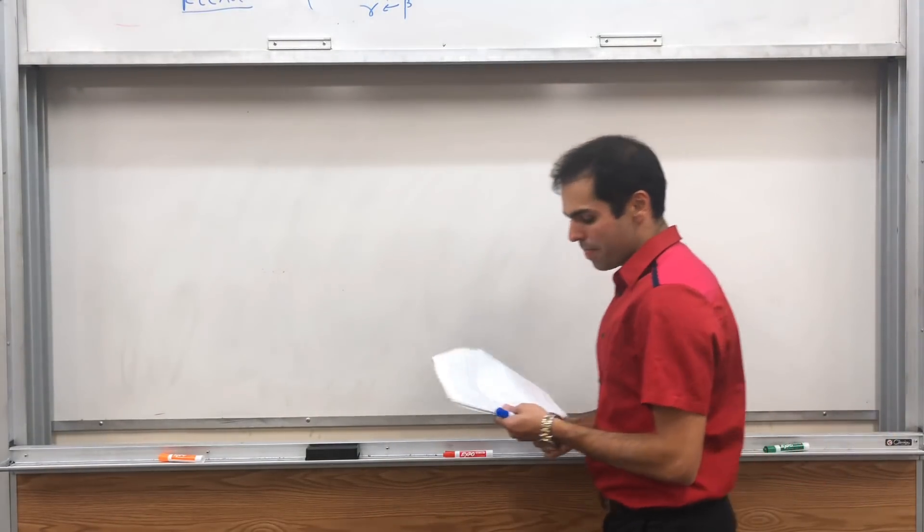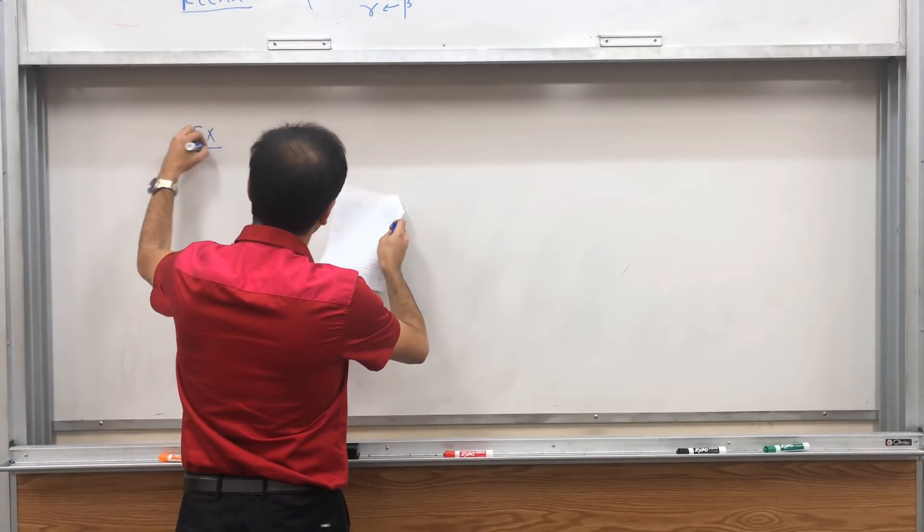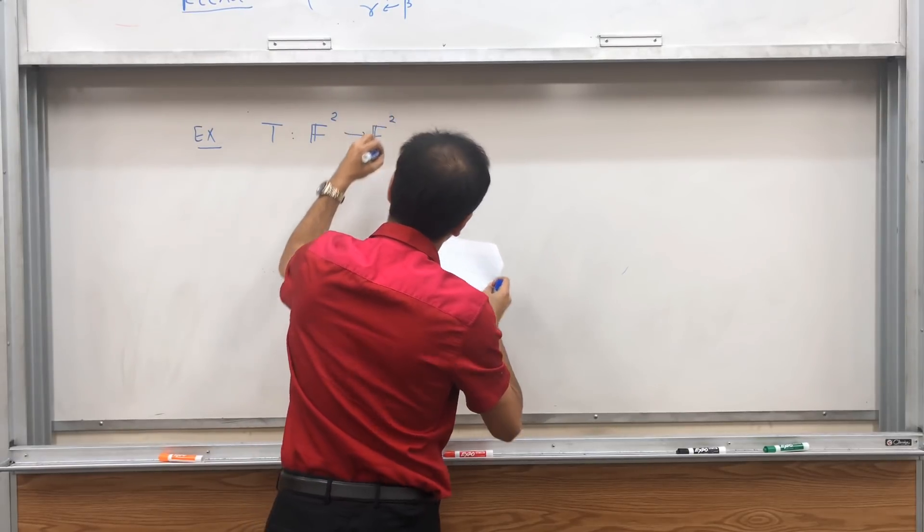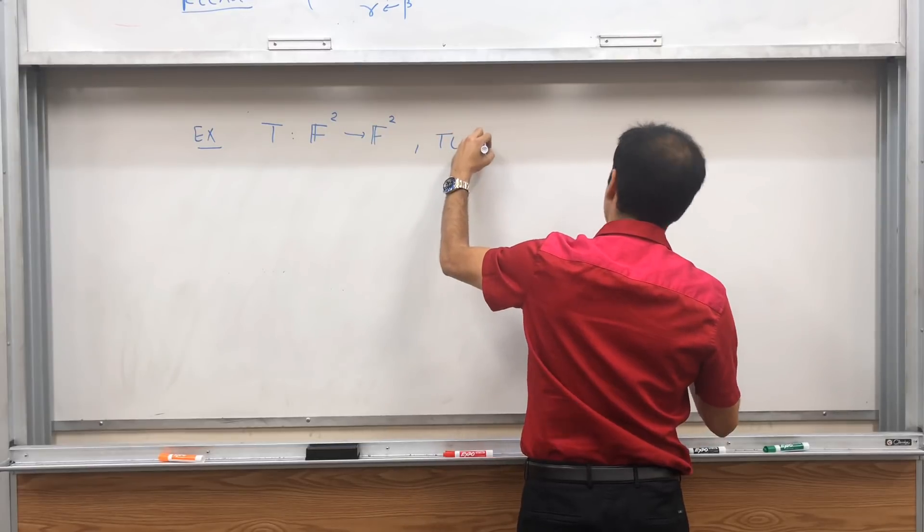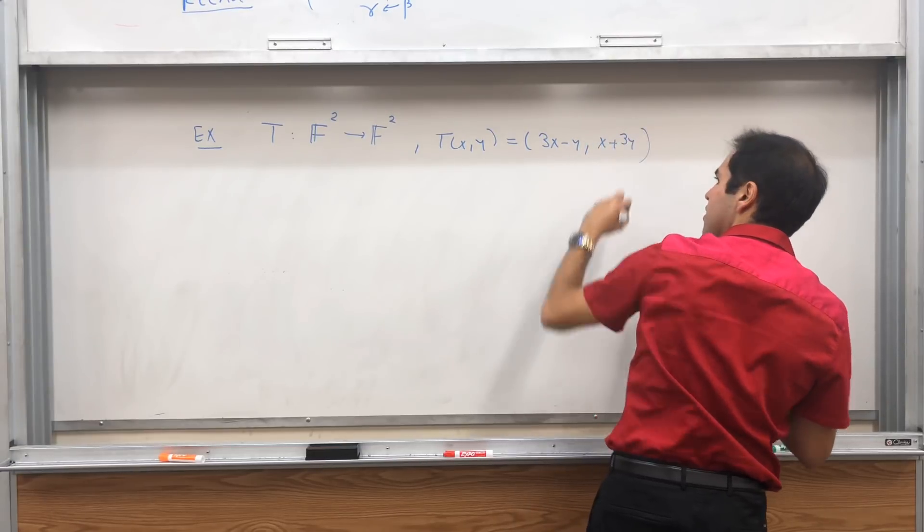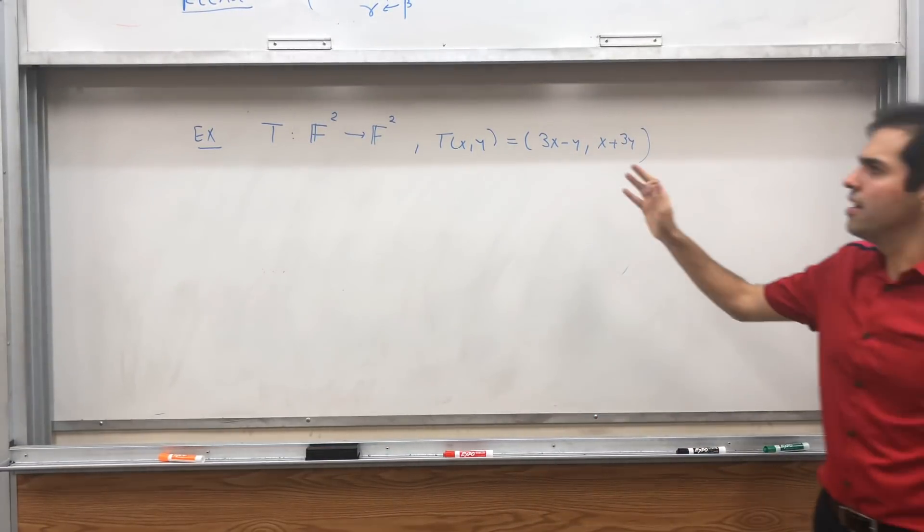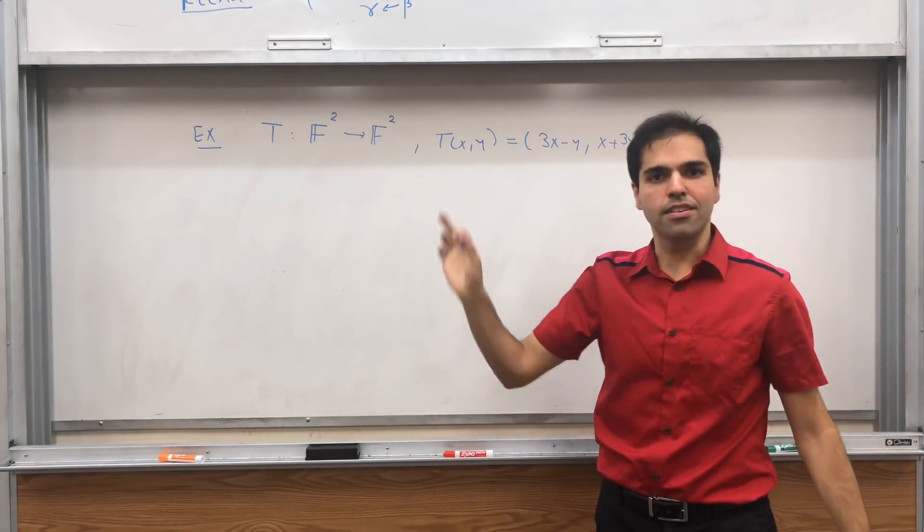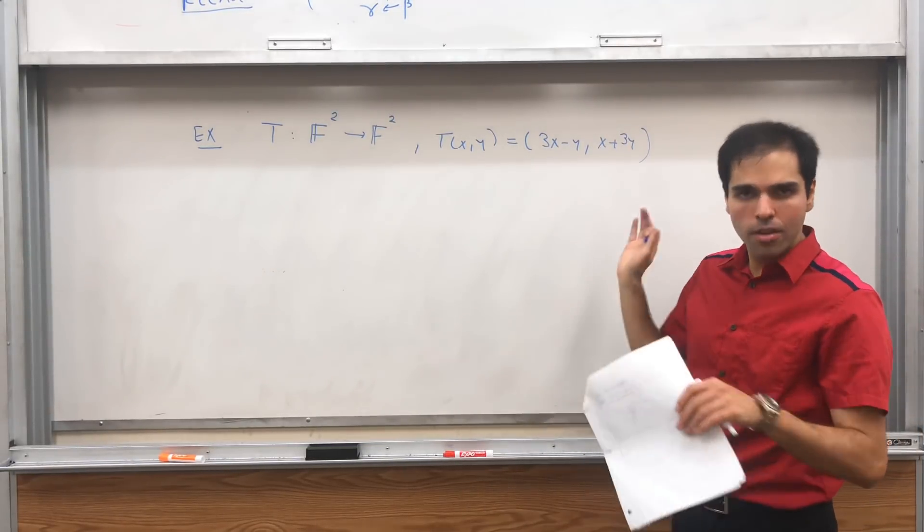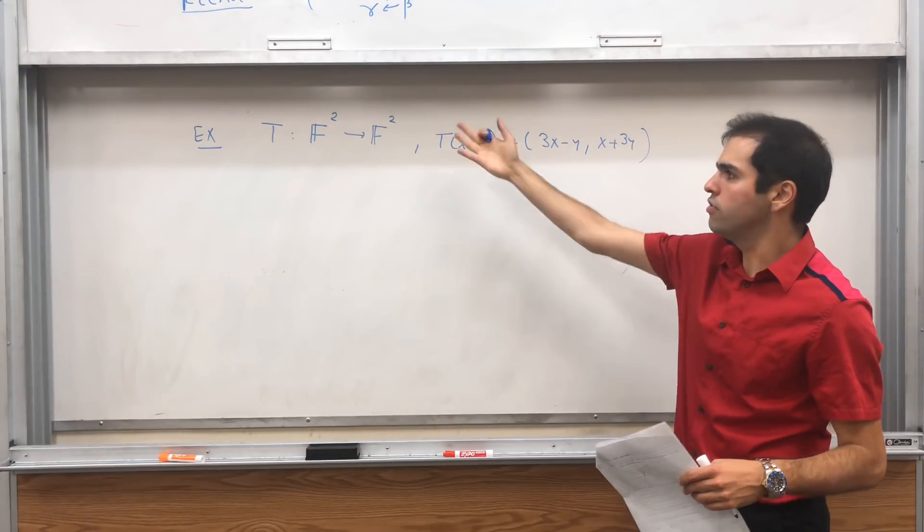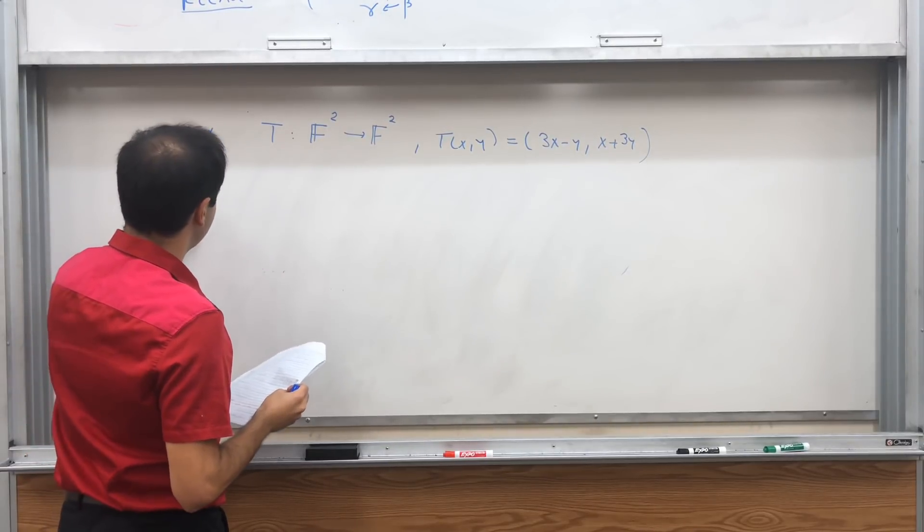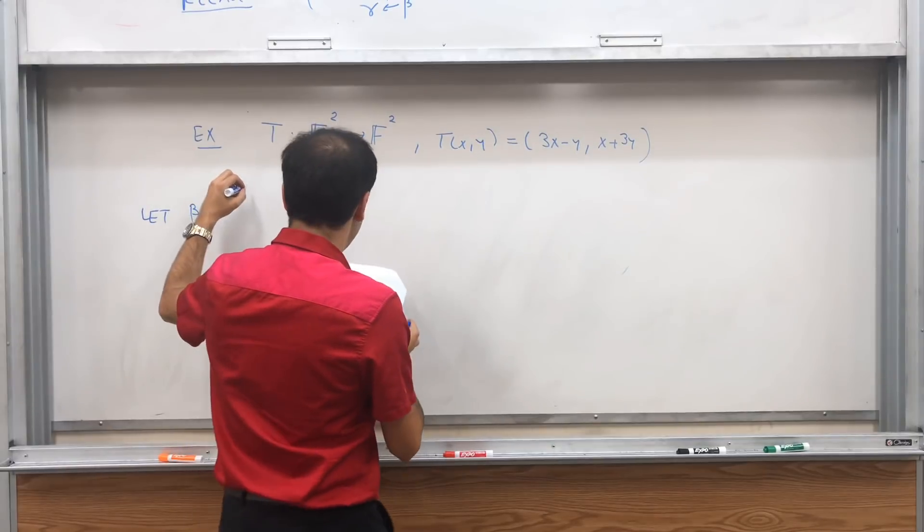Now let me just give you an example to end the day. Consider the following linear transformation T from F² to F², where T of (x,y) is (3x - y, x + 3y). And I would like to emphasize here those could be arbitrary vector spaces. So it could be polynomials to polynomials, and you have an abstract linear transformation. But just to make it concrete, let's consider it R² to R².